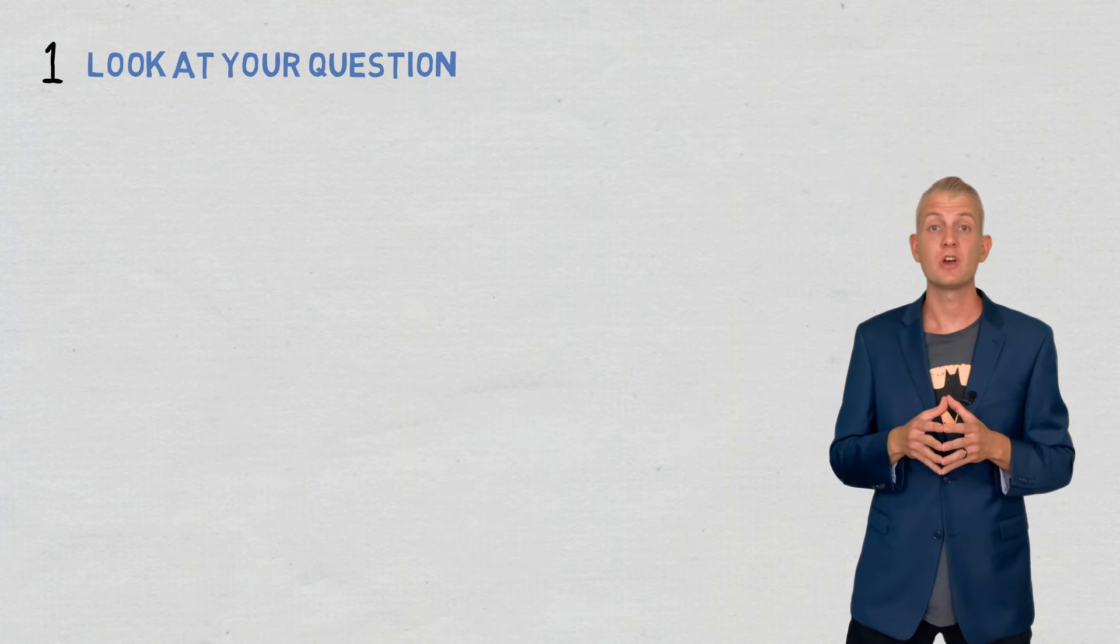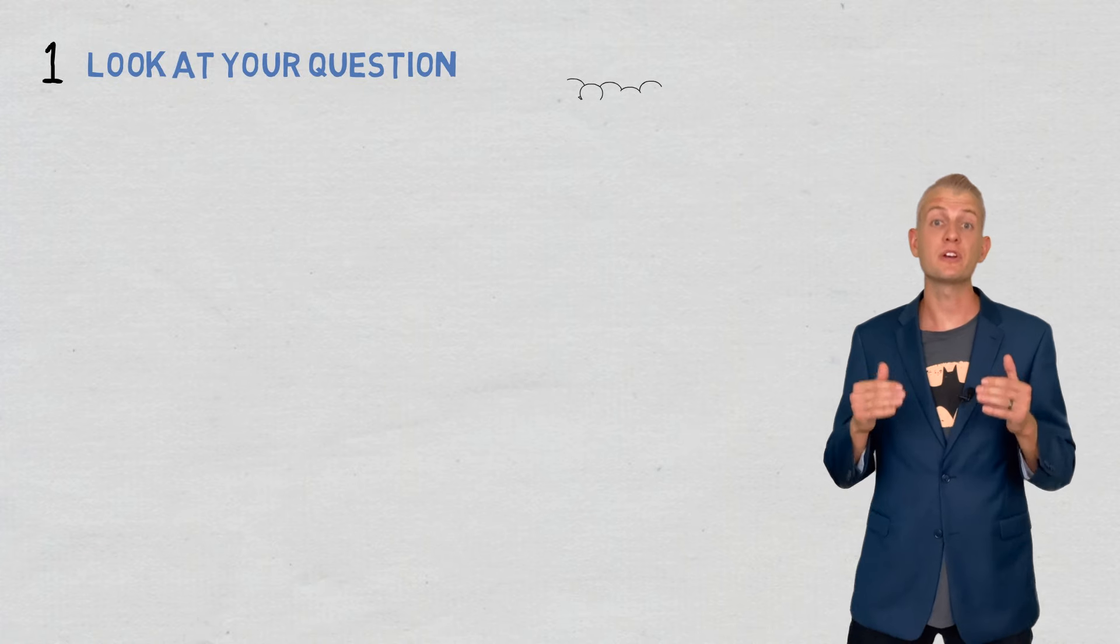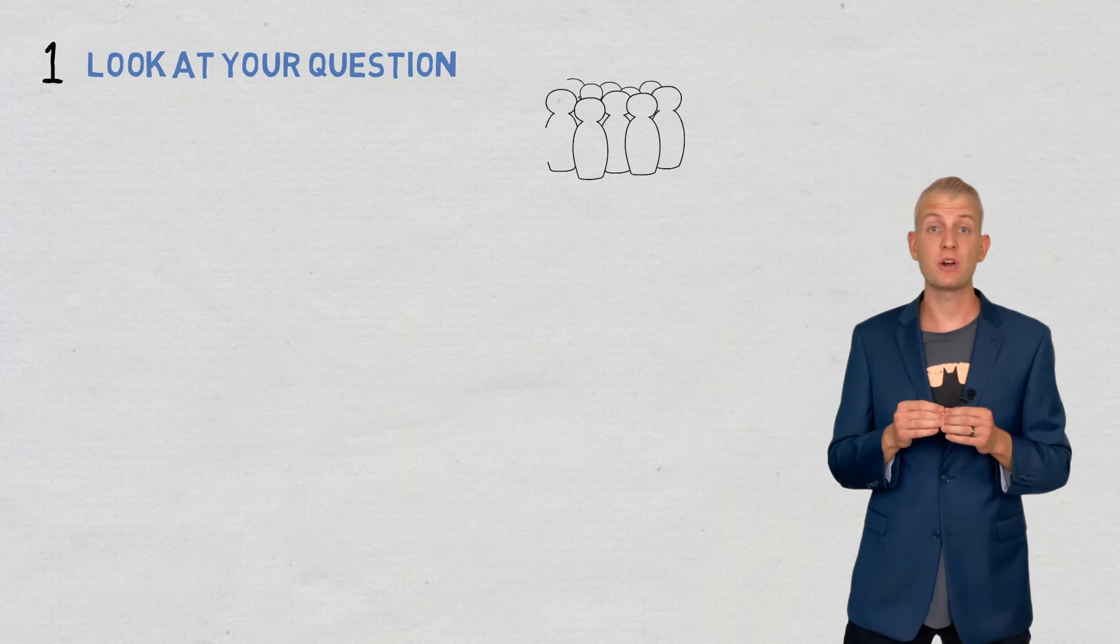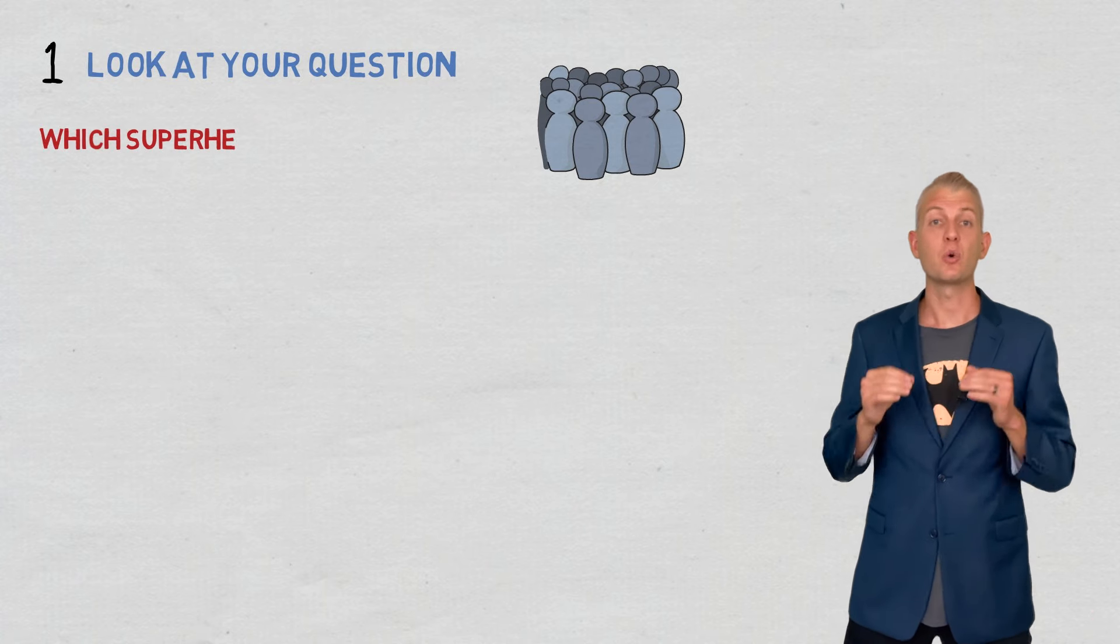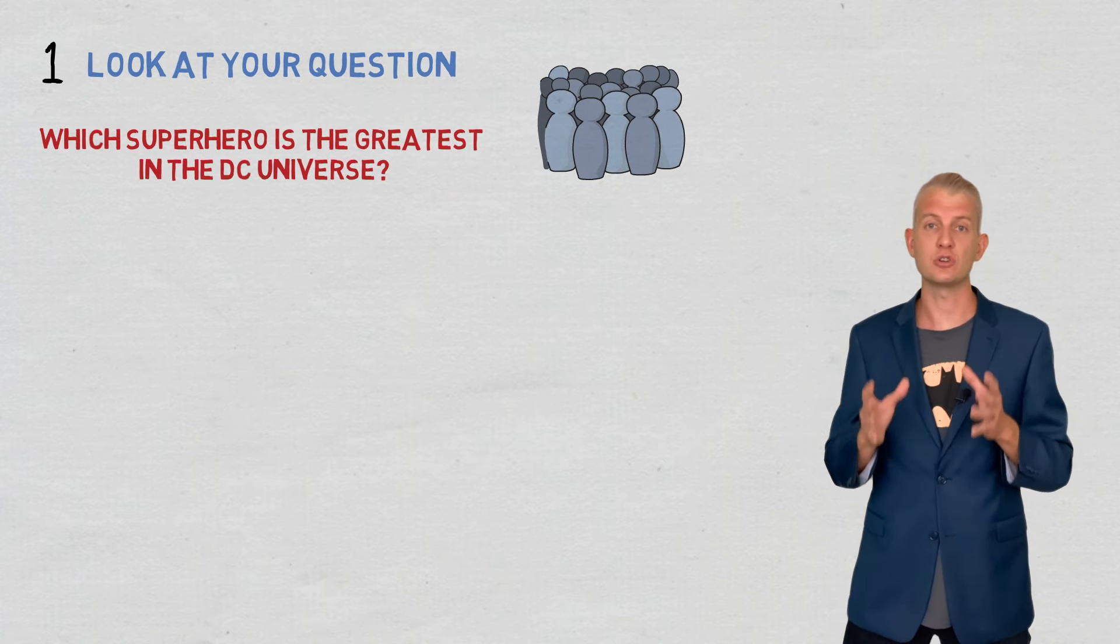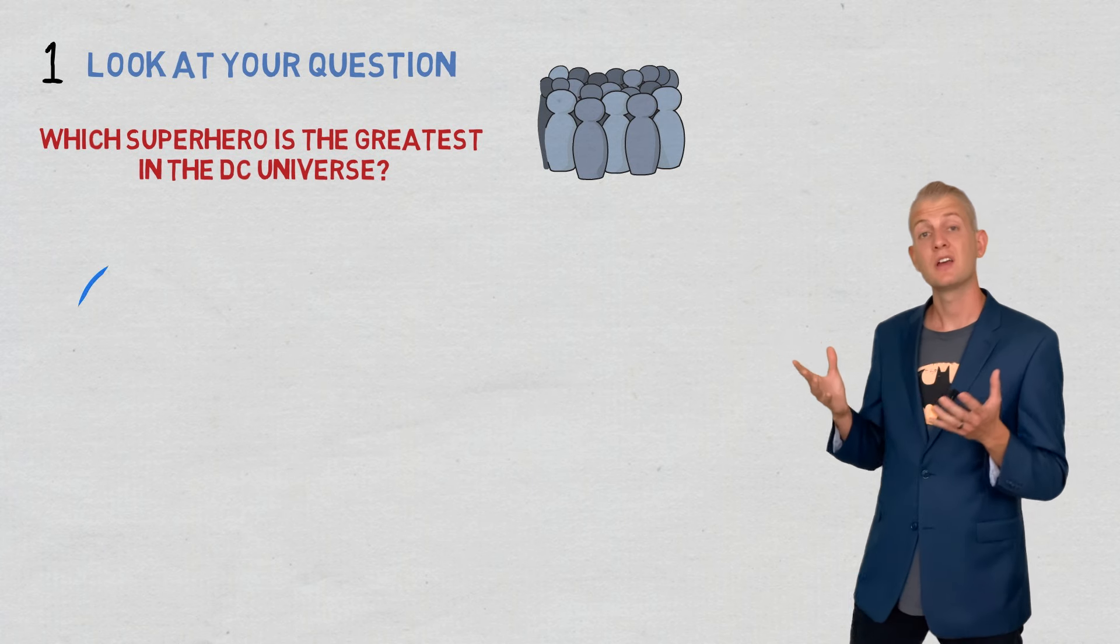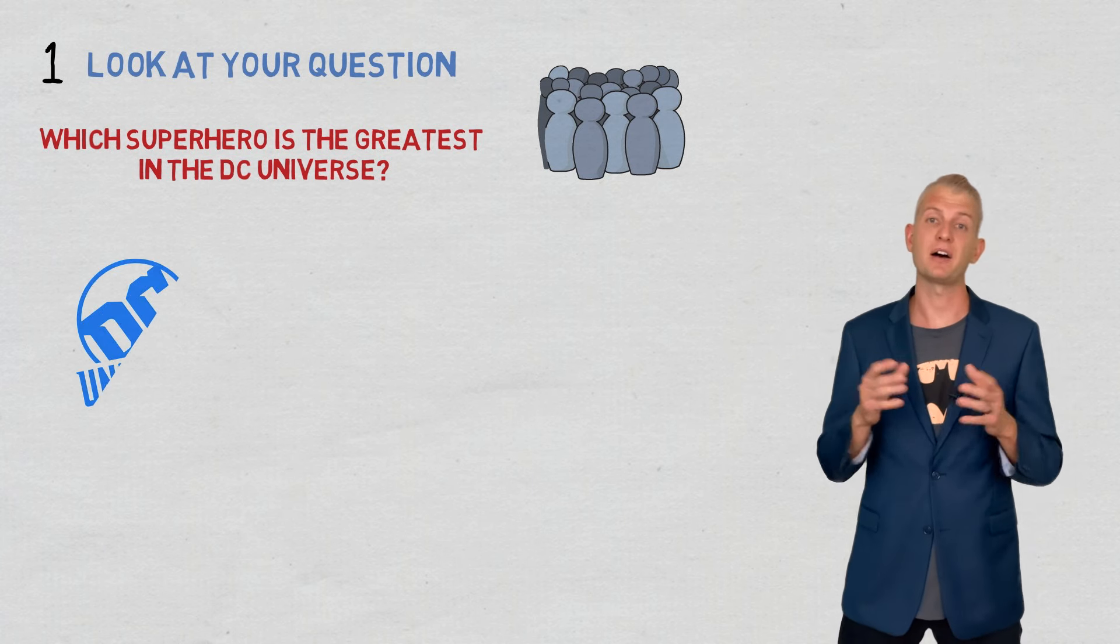Step one, look at your question and think about which words, ideas, concepts, or historical information your reader may not know. Try to think about your question from the perspective of your audience. Look at my example, which superhero is the greatest in the DC universe? When I look at my question, there's three words and ideas that pop out to me.